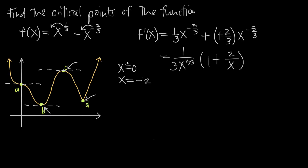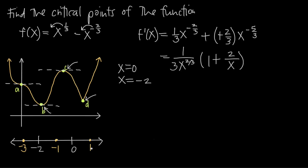To test our critical numbers, we plot them on a number line: x equals negative 2 and x equals 0. This creates three intervals: everything to the left of negative 2, everything between negative 2 and 0, and everything to the right of 0. We test values in each interval — negative 3, negative 1, and positive 1 — by plugging them into the first derivative f prime of x.